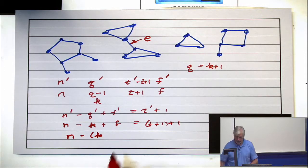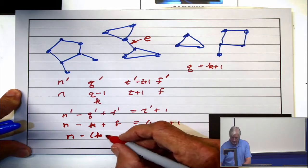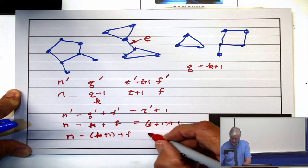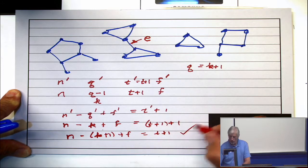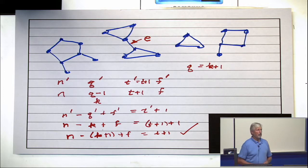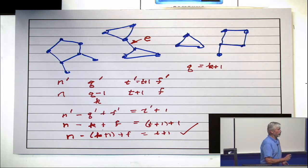The engineer is going to yell at me. N minus k plus 1 plus f equals t plus 1. And that's what we needed. So I just took the formula above it and subtracted 1 from both sides. So the point is, the inductive step is done if there is a bridge.